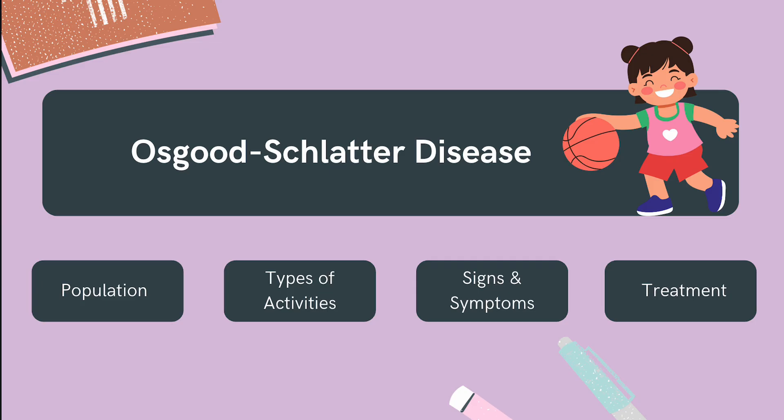First up is Osgood-Schlatter disease, a common cause of knee pain in active adolescents, especially during growth spurts. This condition is often linked to sports involving repetitive knee stress — things like soccer, basketball, or gymnastics — and it presents with pain and swelling at the tibial tuberosity, aggravated by running, jumping, or kneeling.